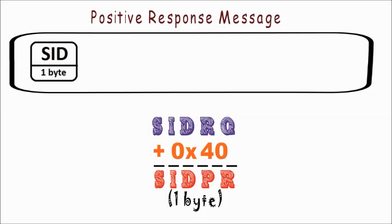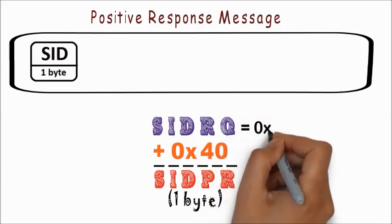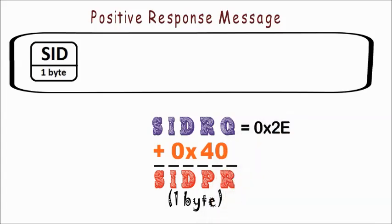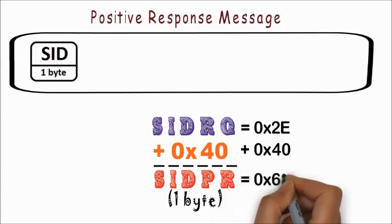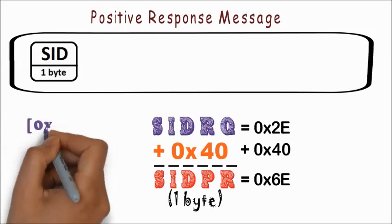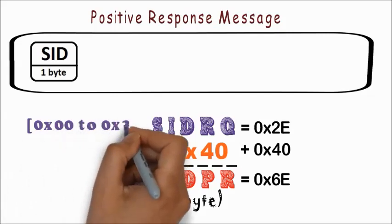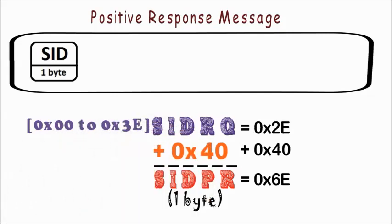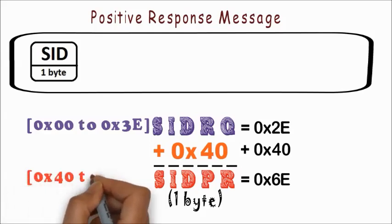For example, if the requested service identifier was hexadecimal 2E, then the positive response service identifier for that would be hexadecimal 2E plus hexadecimal 40, which becomes hexadecimal 6E. Since the range of request service identifier is hexadecimal 00 to hexadecimal 3E, the range of positive response service identifier would be hexadecimal 40 to hexadecimal 7E.